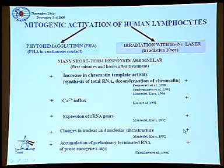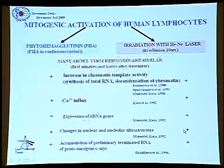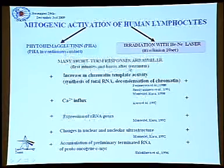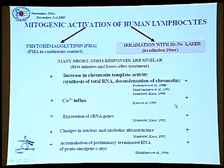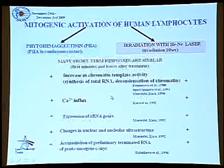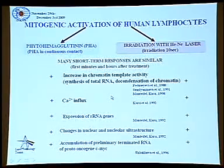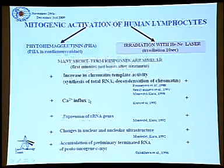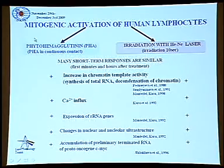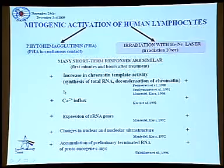I spoke about fibroblasts and HeLa cultured cells, and showed examples about excitable cells, but now about lymphocytes. We have worked with human lymphocytes for many years. We were trying to stimulate DNA synthesis in these cells and found it was possible to replicate a set of early reactions that are very well known when using phytohaemagglutinin.